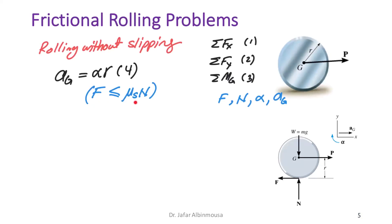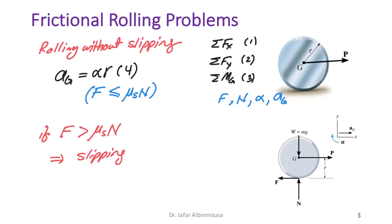If the condition holds, we're done. But if the friction force happens to be greater than μ_s·N, then there is slipping. In that case, the fourth equation becomes f equals μ_k·N.